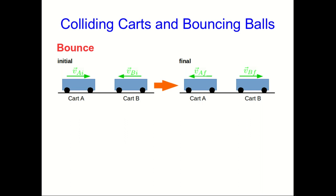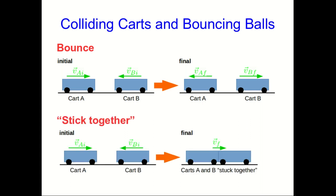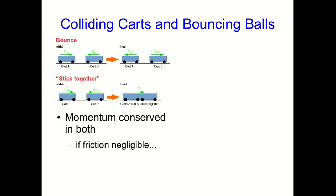At this point we've seen two quite distinct situations: one where the carts bounce off each other, usually with repulsive magnets, and another with velcro where they stick together. Notice that momentum is conserved in both as long as friction is negligible, but there's clearly something different going on. Momentum doesn't tell us anything about this difference, so we need some other physical quantity to distinguish between these situations.